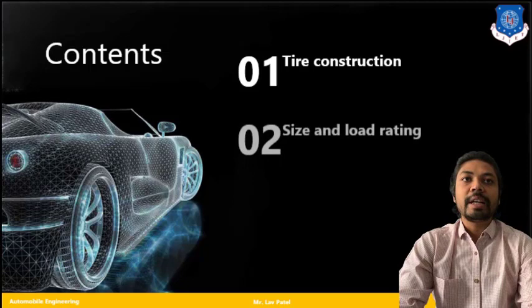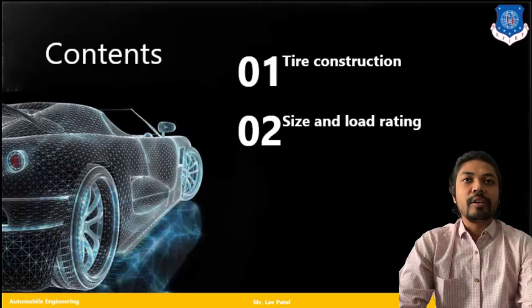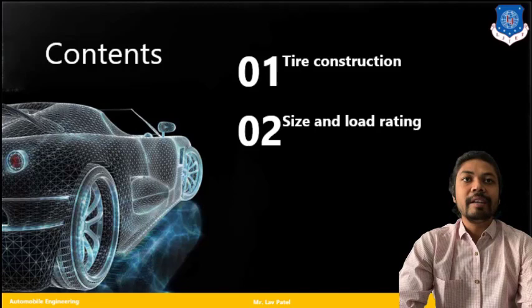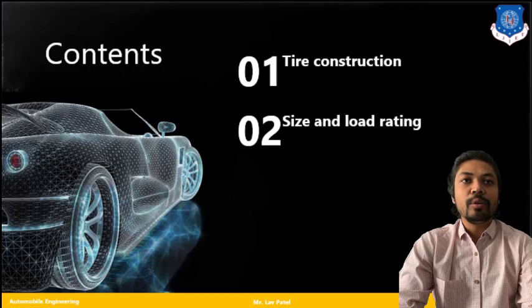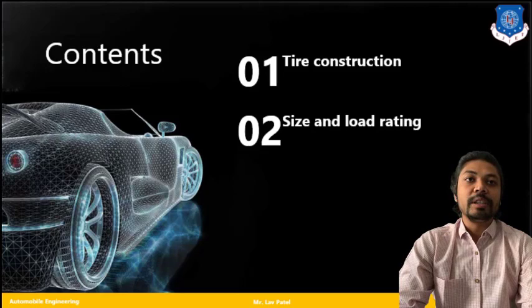In this particular lecture we will see the tire construction. There are several types of tires that we are using nowadays like radial tire, bias tire. What are the functions of the particular tire and which tire is very suitable to drive depending upon the individual's requirement and condition. Second, the size and load rating. There are several types of tires depending upon the different kind of load that has to be carried.